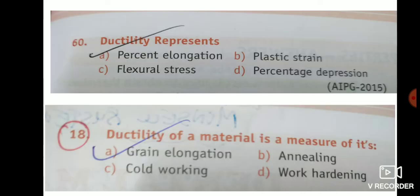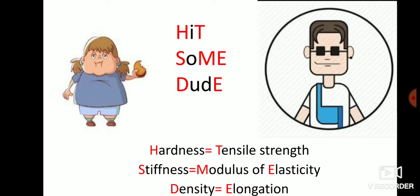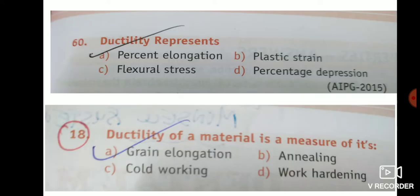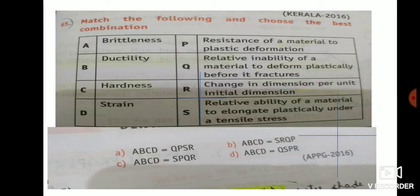Ductility represents percent elongation. In the mnemonic 'DUDE' — D, U, D, E — D and E give us ductility equals elongation. Question 60 and question 18 both state that ductility of a material is a measure of its elongation. This has appeared in APPG 2016 and was a recent question in NEET 2018 as well.